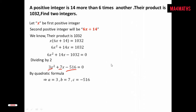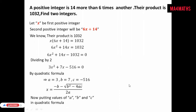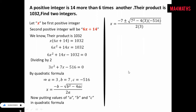We put these values into the quadratic formula: x equals minus b plus or minus the square root of b squared minus 4ac, all over 2a. Substituting, x equals minus 7 plus or minus the square root of 7 squared minus 4 times 3 times minus 516, over 2 times 3. After simplification, x equals minus 7 plus or minus the square root of 6241, over 6.